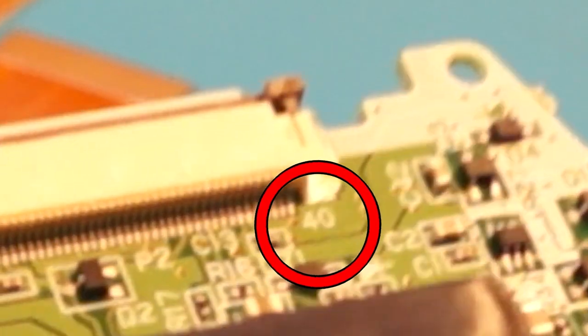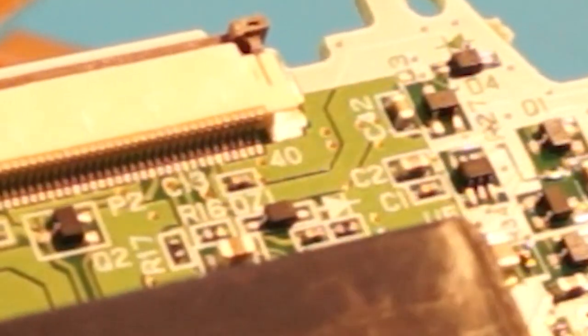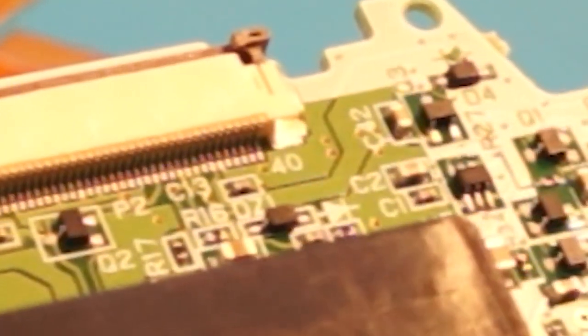For this next step, you're going to need to know if you have a 32 pin or a 40 pin Gameboy Advance model. Checking the back of the main board, looking next to the connector, you can see this small number which tells you how many pins you have. In our case, we have 40.